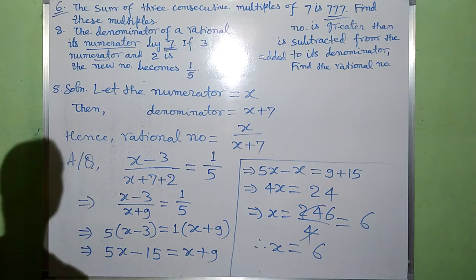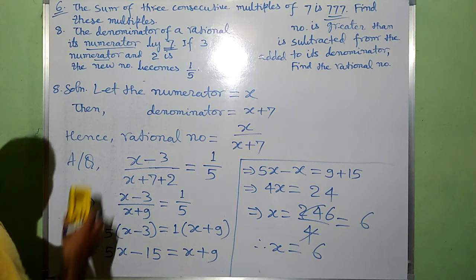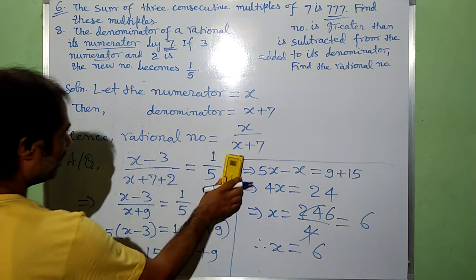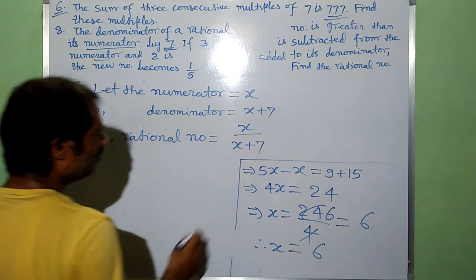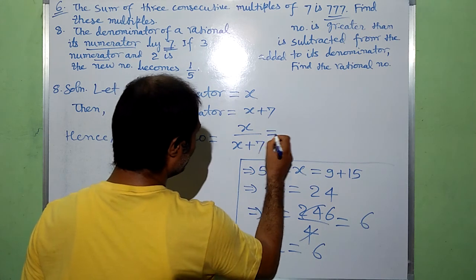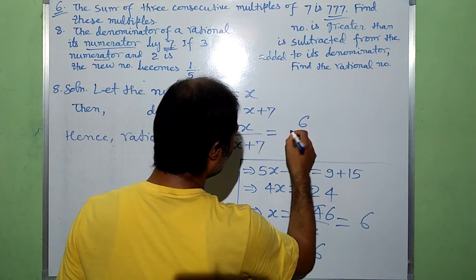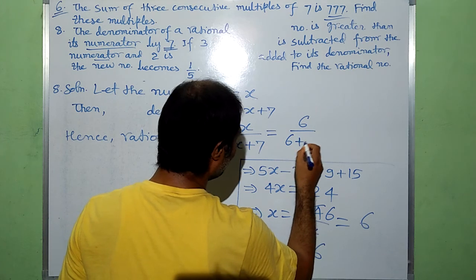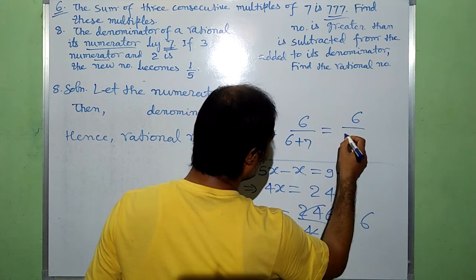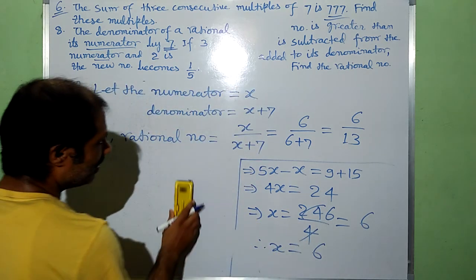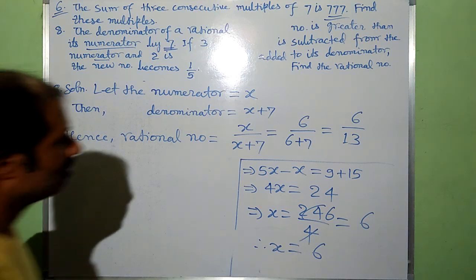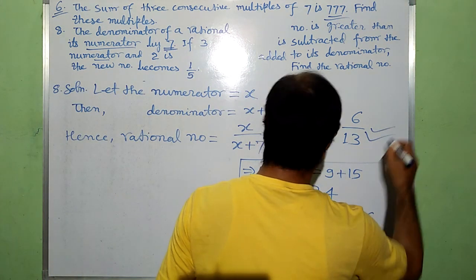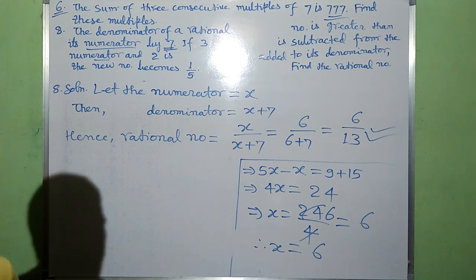Now the numerator is x, that is 6. Hence, the rational number is equal to x by x plus 7, that is 6 by 6 plus 7, which is 6 by 13. This is the required rational number. That's all. Thank you very much for watching.